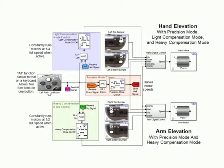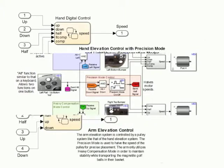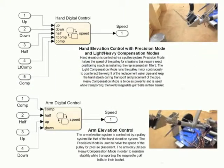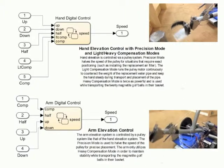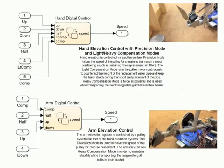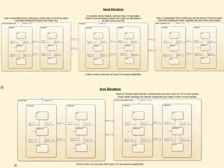This section of the program is the most diverse in terms of functionality. The alt key precision mode and both compensation modes are all defined here, as well as the elevation systems for both the arm and the hand. The elevation systems also utilize precision mode, as well as two compensation modes, which allow the elevation systems to hold heavy objects at a steady height. The only difference between the arm and hand elevation systems is light compensation mode, which is only used by the hand.